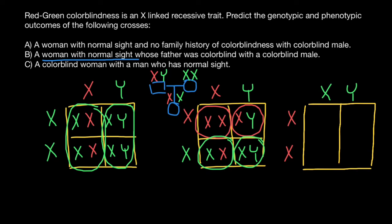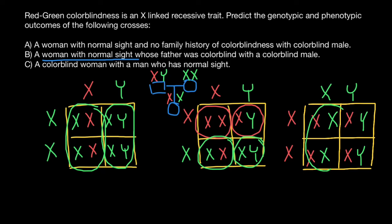Let's take a look at what the progeny is going to be. The defective X from the mother with the normal X from the father, defective X from the mother with normal X from the father — and defective X from the mother with the normal Y from the father, defective X from the mother with normal Y from the father. All female progeny are going to be obligate carriers but phenotypically will have normal vision. All sons of such a couple would be affected and colorblind. That's all for today — subscribe and see you in the next video, goodbye.